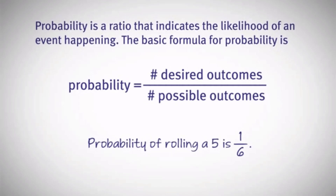One more diagram shows that the probability ratio indicates the likelihood of an event happening. The basic formula for probability is: probability equals desired outcomes divided by total possible outcomes. For rolling a die, getting a 4 is 1 by 6 since there are 6 possible outcomes and only one favorable outcome. For drawing a card numbered 5 from a deck of 52 cards, there are four 5s in the deck, so the probability is 4 by 52.